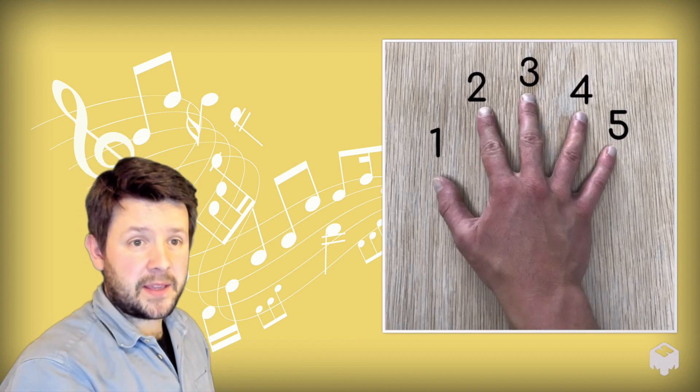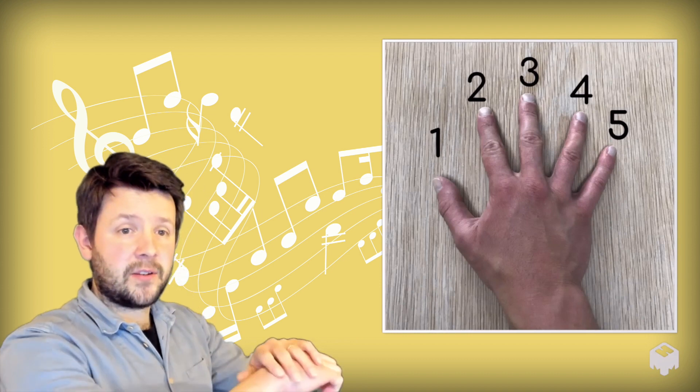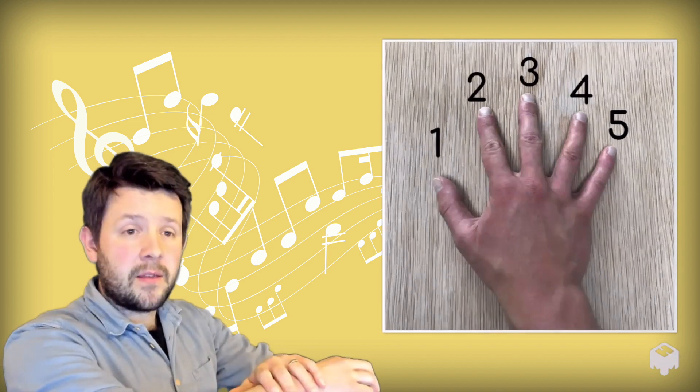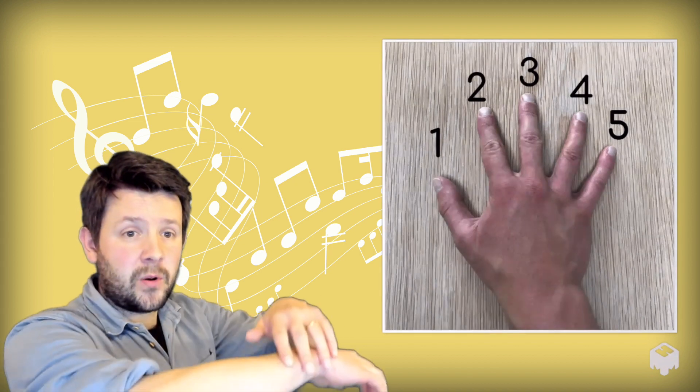The aim of the This Little Piggy exercise is to practice bouncing the weight of the arm through all five of your fingers one at a time.